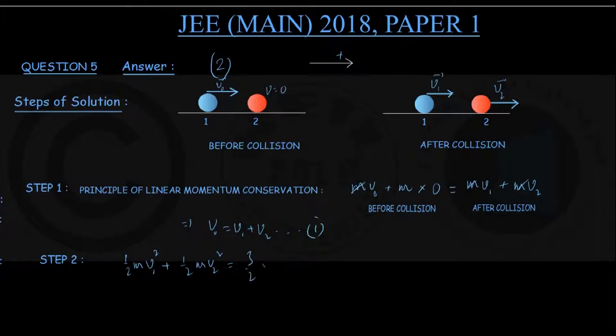So it is 3 by 2 times the initial kinetic energy, which was only for particle one: half m v0 squared. 50% increase in energy means final energy is 3 upon 2 times initial kinetic energy.